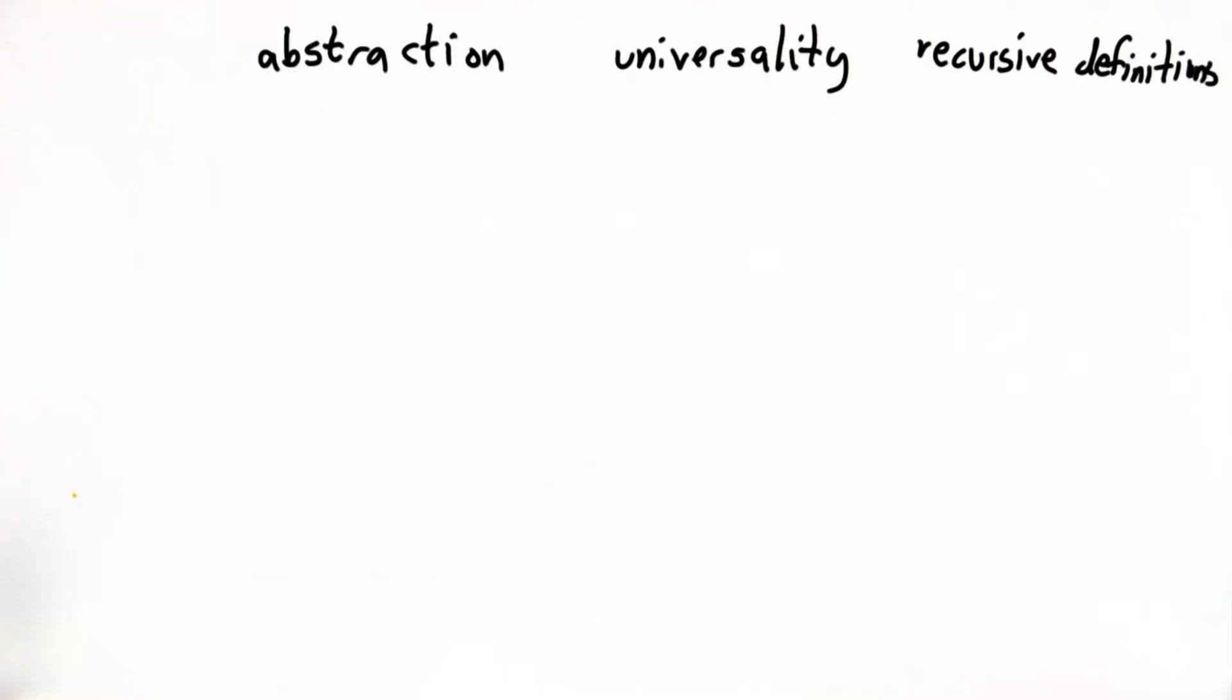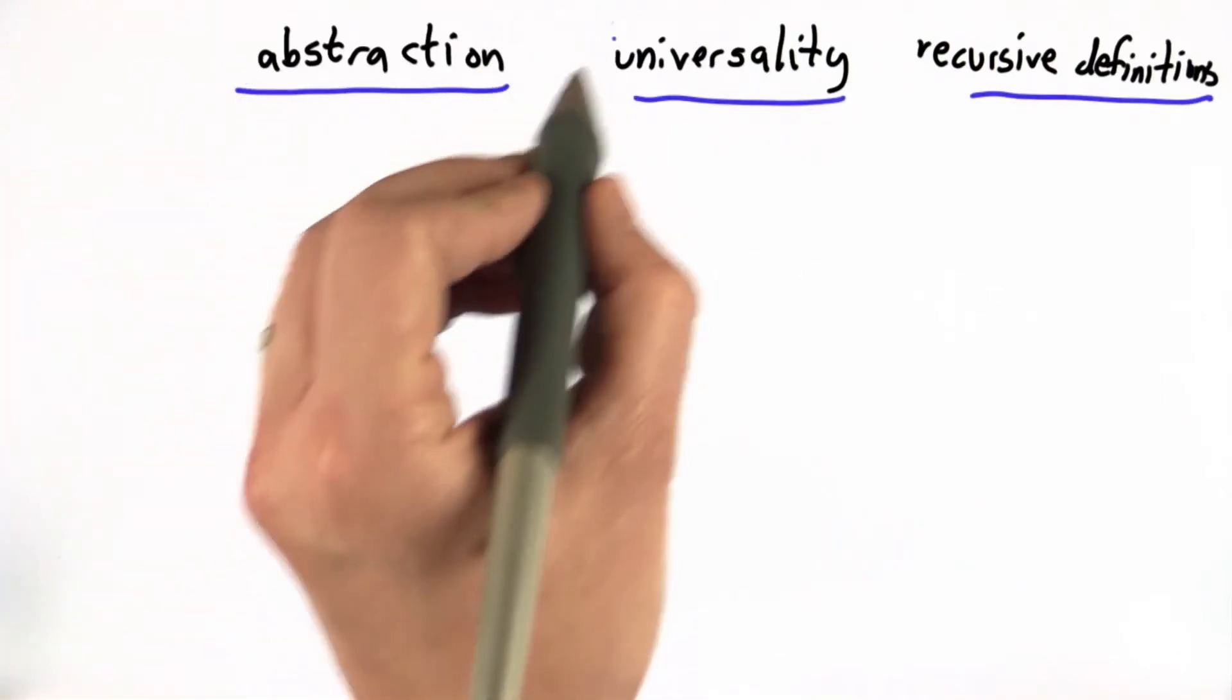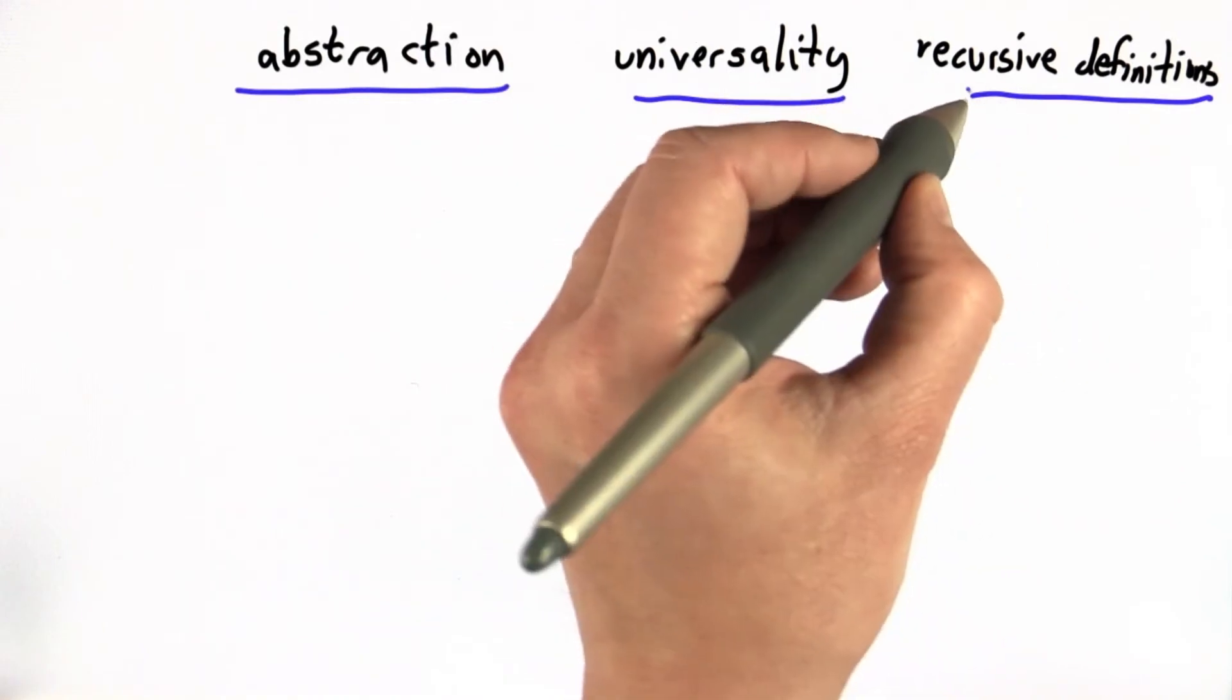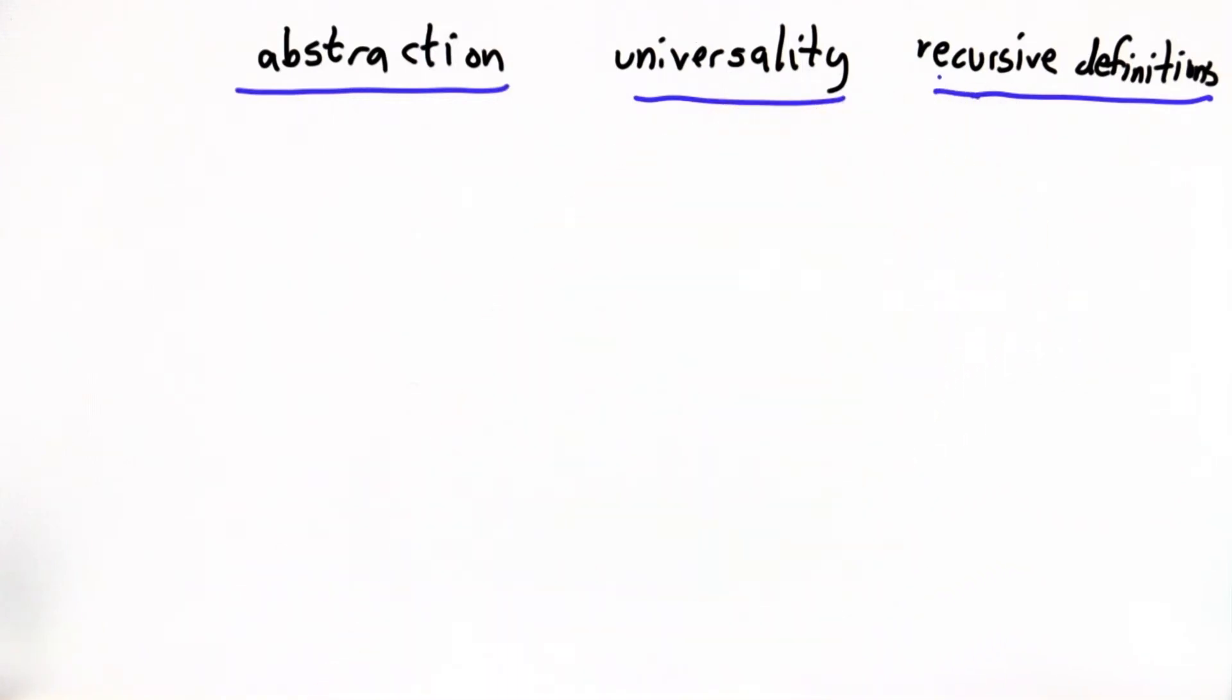So, these are our three big themes in the class: abstraction, universality, and recursive definitions. What I want to do now is look at various things that we've covered throughout the course and see how they fit into these three main themes.